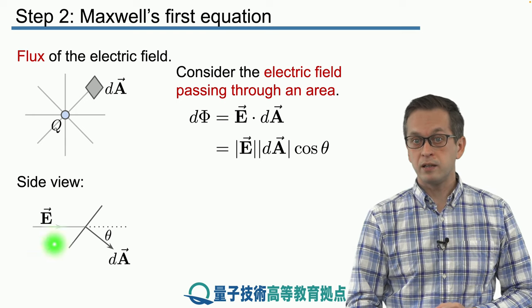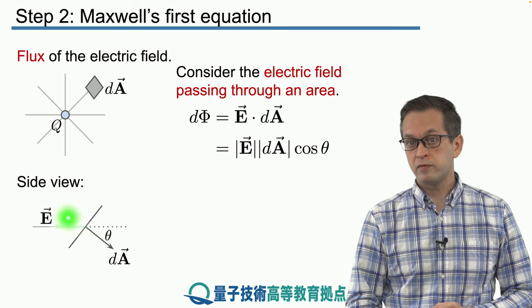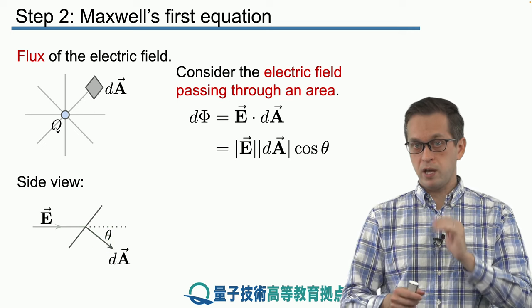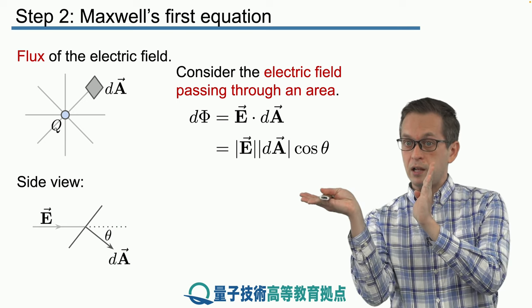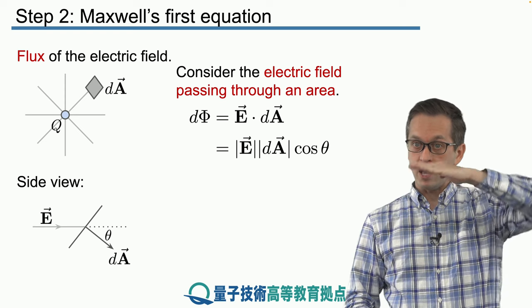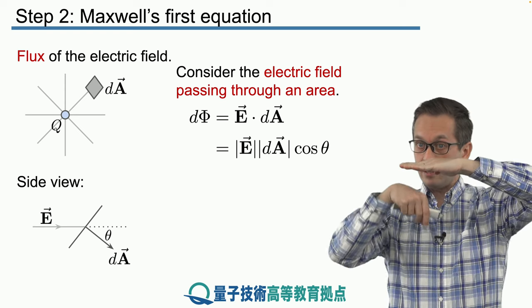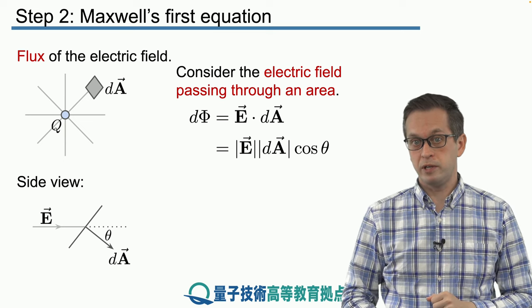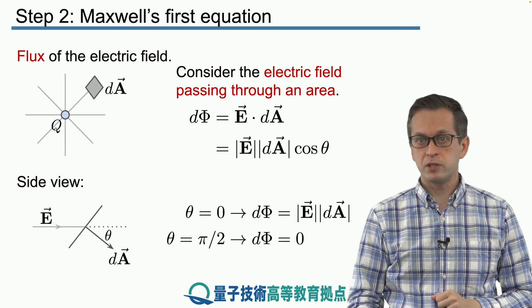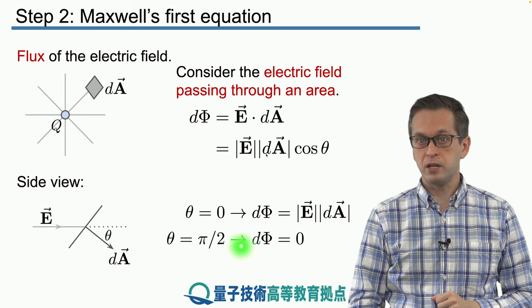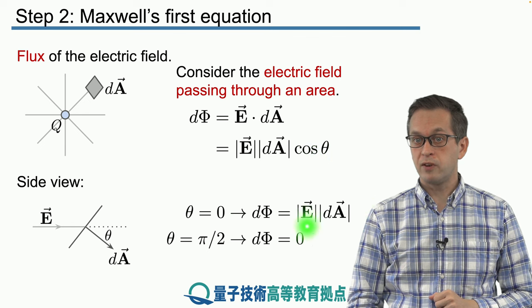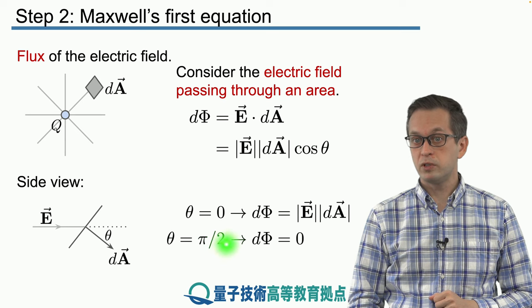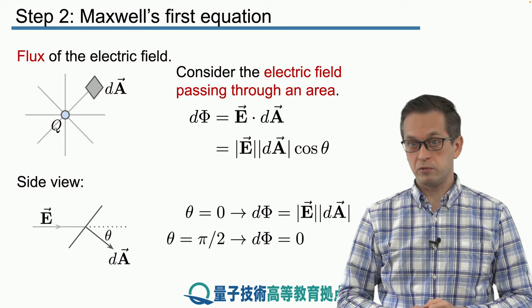This is why area is a vector, represented by an arrow always normal to the area. If the area is perpendicular to the field, the arrow points along the electric field. If the area is parallel to the field, the area vector is perpendicular to the field. If θ equals zero, cosine θ is one and the flux through dA is maximized, whereas if θ equals π/2, cosine is zero and the flux also goes to zero.